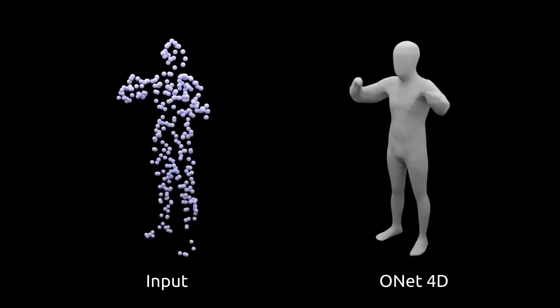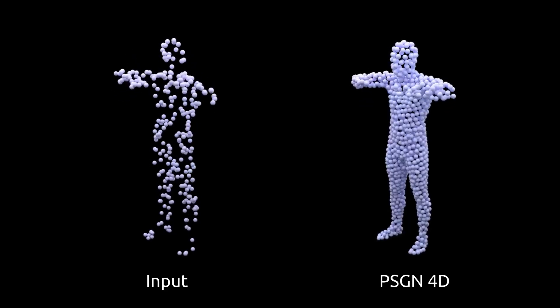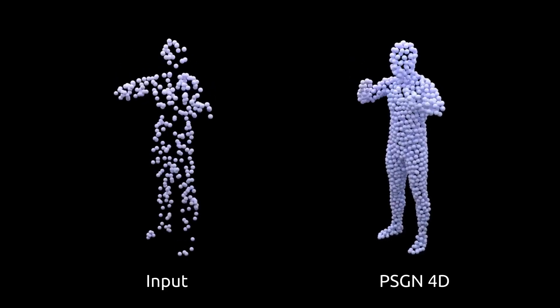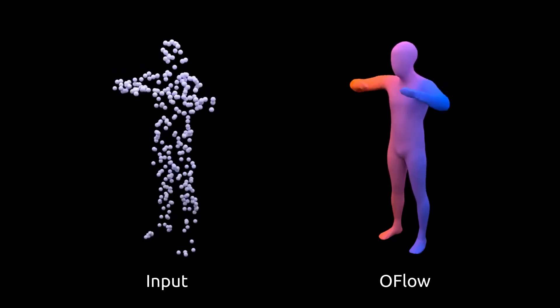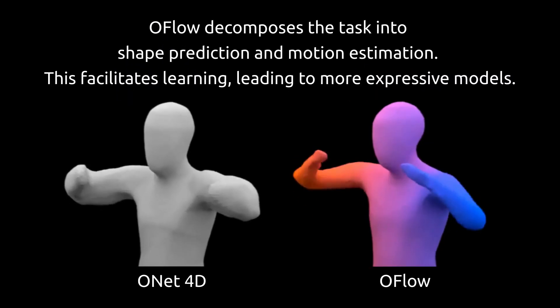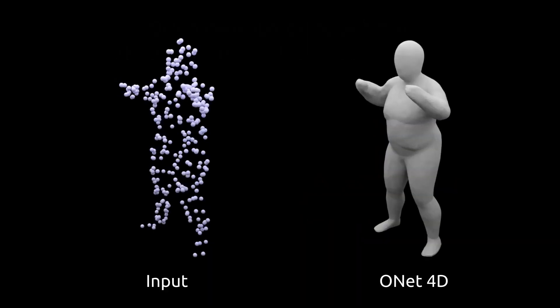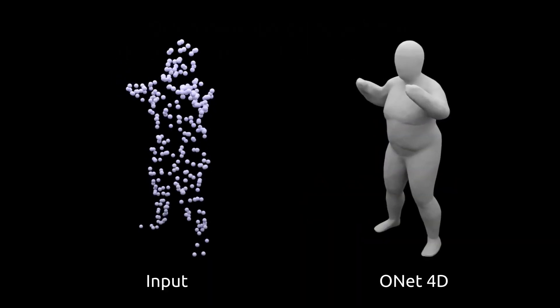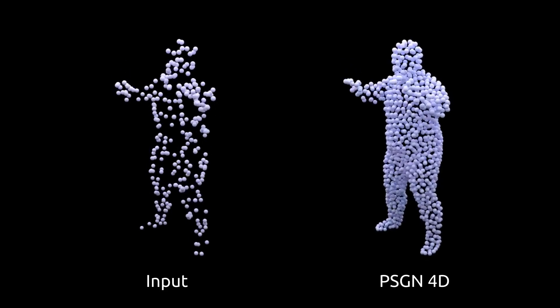We now show point cloud completion results. We first show two baselines, ONet4D and PointGenerationNetwork4D, and then our method, OFlow. By disentangling shape and motion, OFlow leads to more expressive models. Here, we show the same two baselines and our method for another example.